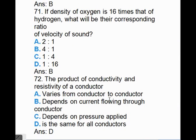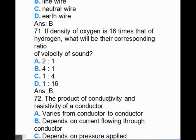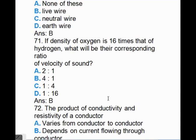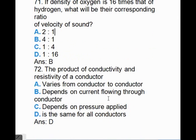If density of oxygen is 16 times that of hydrogen, what will be their corresponding ratio of velocity of sound? Answer is B, 4 ratio 1. The product of conductivity and resistivity of a conductor, answer is D, is the same for all the conductors.